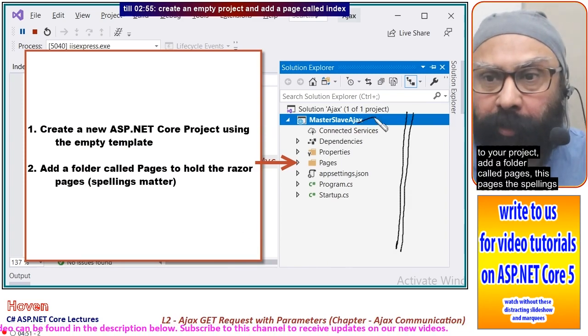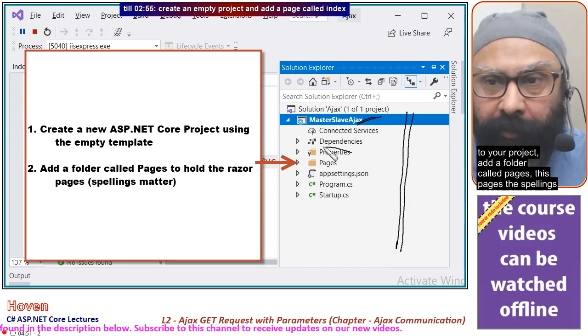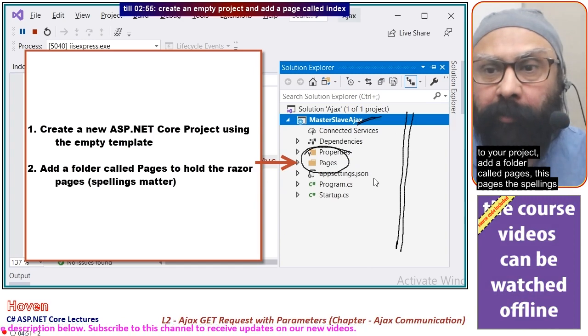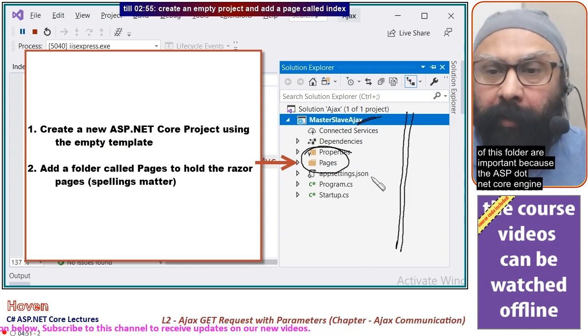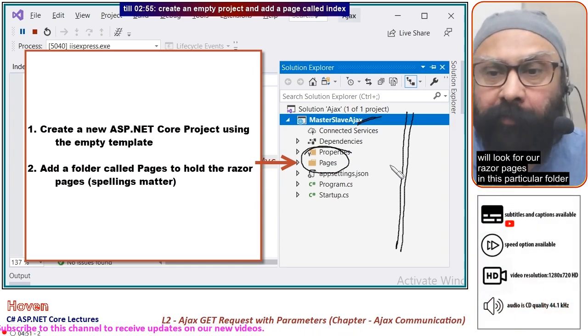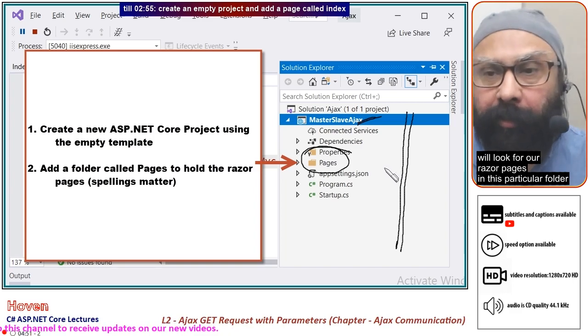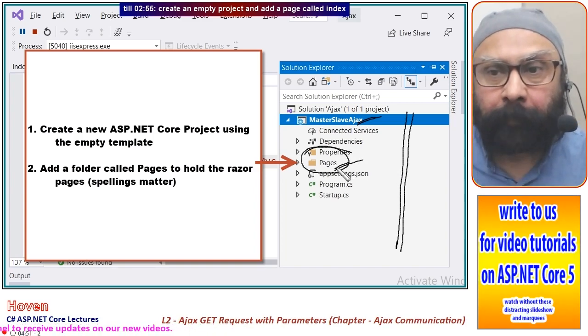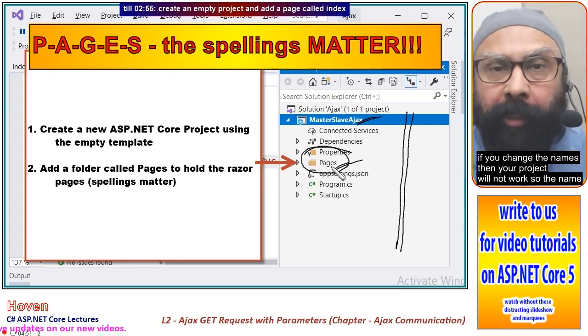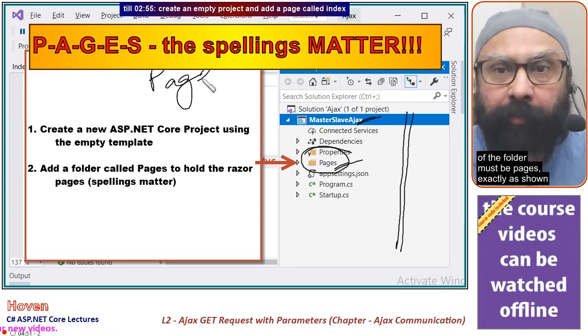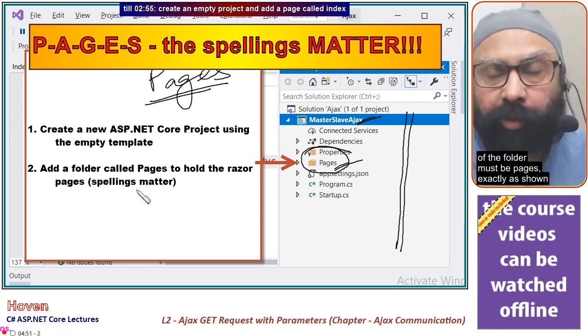Add a folder called Pages. The spelling is important because the ASP.NET Core engine will look for Razor pages in this particular folder. If you change the name, your project will not work, so the folder must be named Pages exactly as shown.